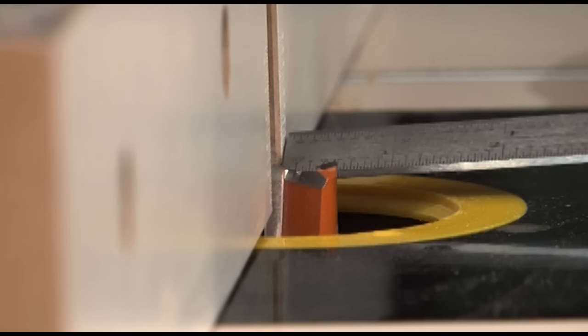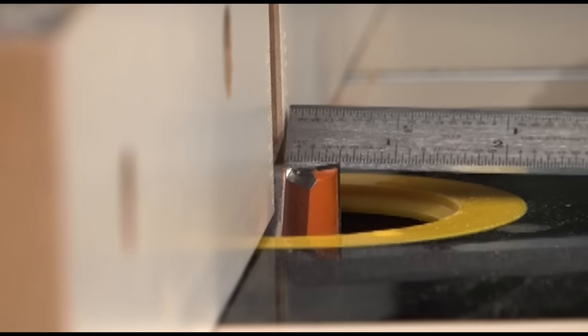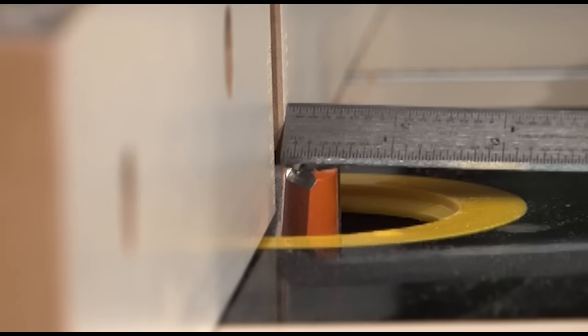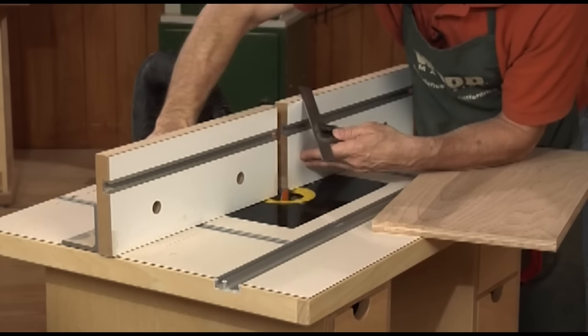To cut a rabbet with a straight bit, set the height of the bit for the depth of the rabbet. Then measure from the outside edge of the bit to the fence to set the width of the rabbet. Then lock the fence in place. Then just run the workpiece along the fence to cut the rabbet.